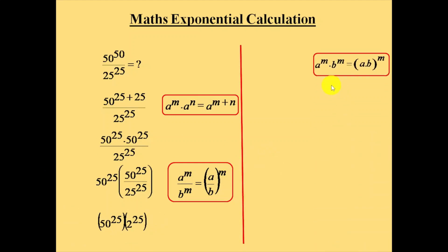Now we have the formula a power m times b power m is equal to a times b whole power m. Here the exponent is the same, 25 and 25, and these two are multiplied with each other. So we can multiply the base, which is 50 and 2, giving us 50 times 2 whole power 25.